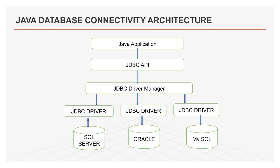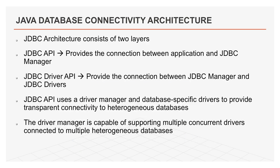JDBC architecture: here is a figure showing the architecture of JDBC. The JDBC API supports both two-tier and three-tier processing models for database access. In general, JDBC architecture consists of two layers: the JDBC API, which provides the connection between the application and the JDBC manager; and the JDBC Driver API, which provides the connection between the JDBC manager and JDBC drivers.